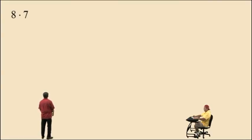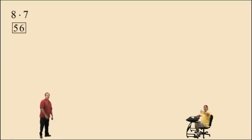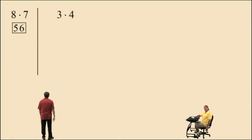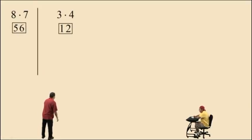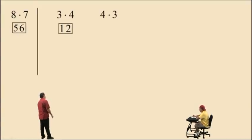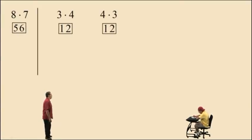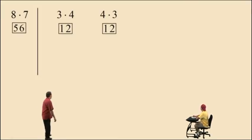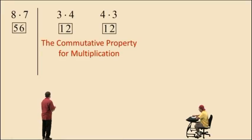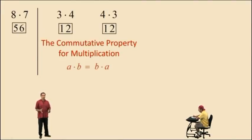8 times 7, Charlie — what's 8 times 7? 56. It is 56. 3 times 4 is 12, right Charlie? What's 4 times 3? 12. Very good. Notice here: 3 times 4 is the same as 4 times 3. This demonstrates the commutative property of multiplication, which basically says if you have a times b, you get the same result as b times a.